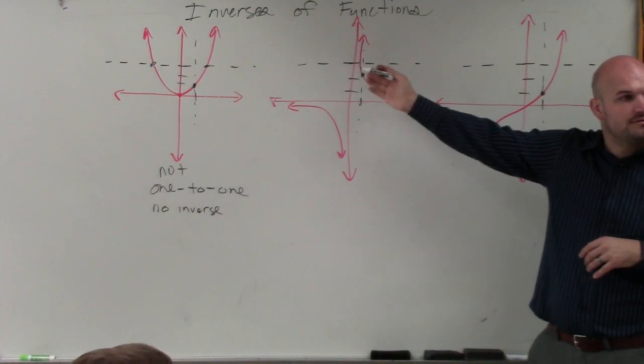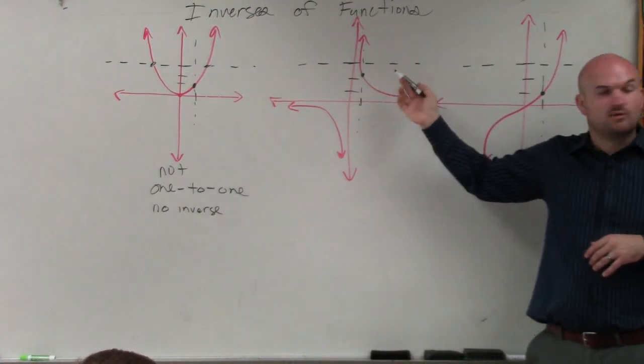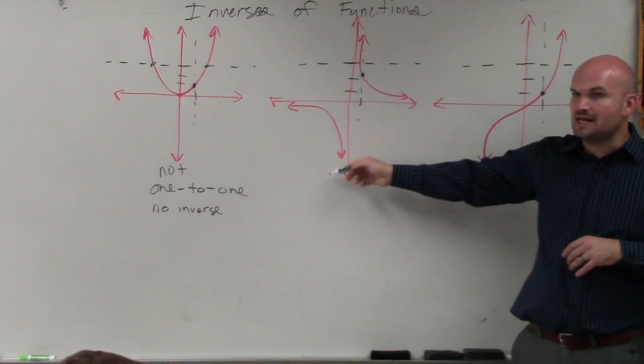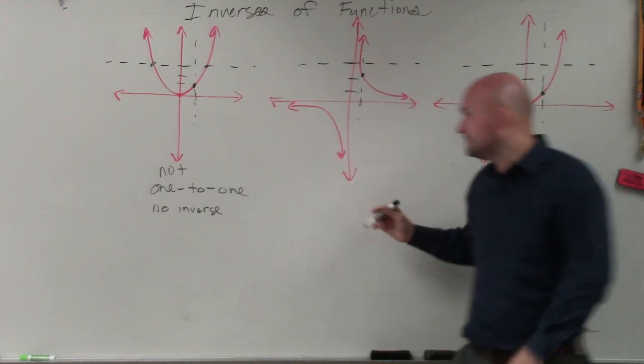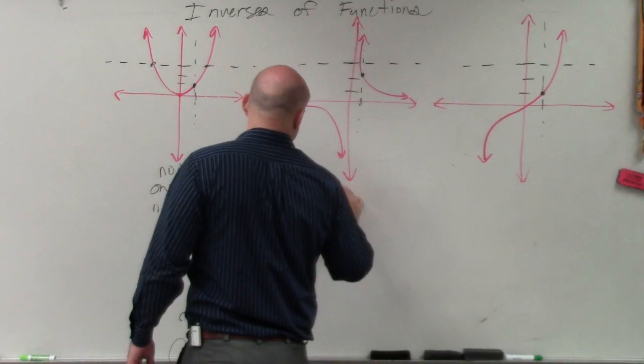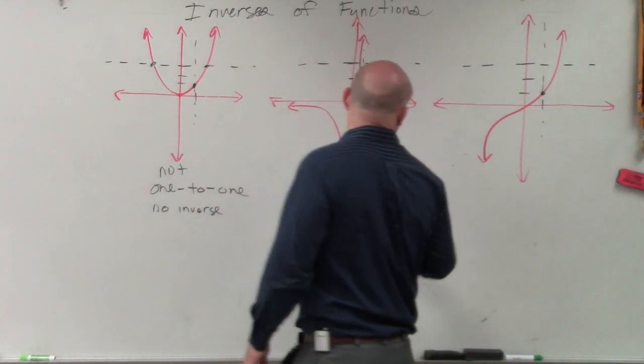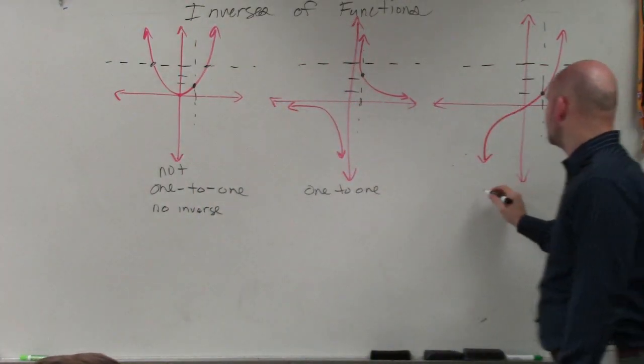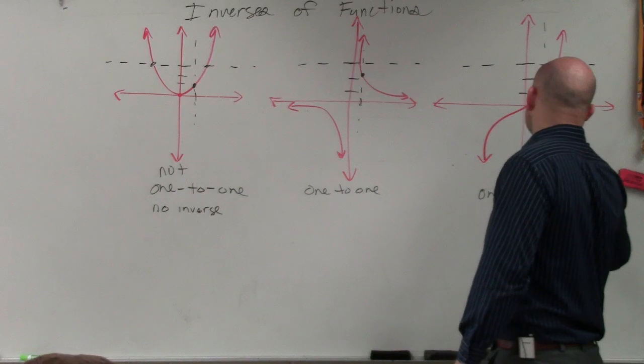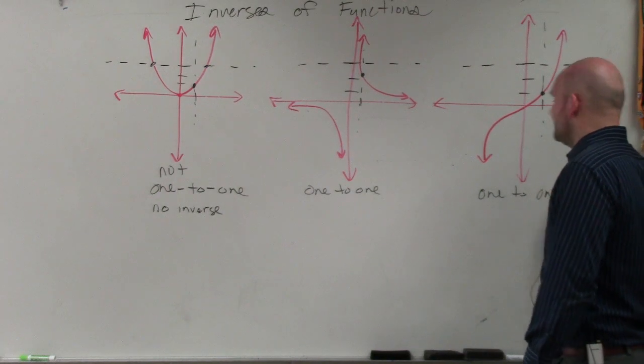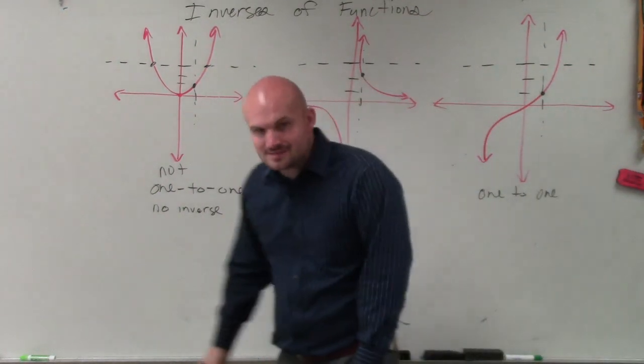However, this is one-to-one, right? My one output has one input, and there's no other horizontal lines that would cross the graph more than once, right? So this is what we call one-to-one. And this is another example, this is another example of one-to-one. So the best way to understand one-to-one is basically just using the horizontal line test.